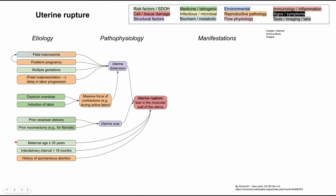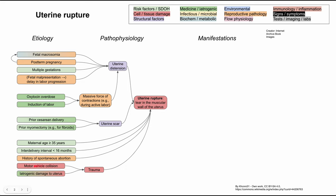There are also some other general risk factors: advanced maternal age, usually defined as over 35 years; a short inter-delivery interval, defined as 16 months or less between deliveries; and a history of spontaneous abortion. Trauma is a more rare but serious cause — if the mother is involved in a motor vehicle accident or sustains iatrogenic damage to the uterus, for instance during a different abdominal surgery where the uterus is accidentally damaged during pregnancy.